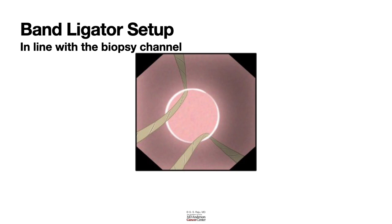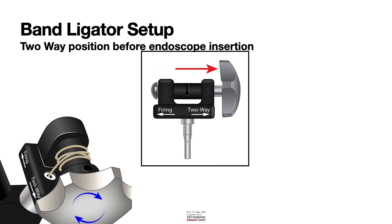You now have the endoscope with the cap and bands attached to the distal end, and the band ligator handle at the biopsy port. Before introducing the scope, keep the band ligator handle in the two-way position. In two-way position, the tip of the scope moves easily because the trigger card can move freely. If in firing position, the scope becomes stiff — it is dangerous to insert the endoscope with the band ligator in firing position.